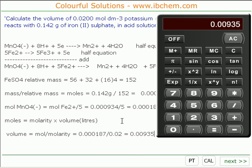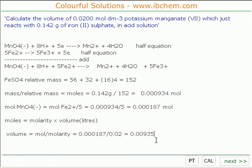Now remember, this is in litres. And that equals, multiplied by 1,000, equals 9.35 millilitres. So the answer is, the volume which is required to react with 0.142 grams of iron II sulphate in acid solution, is 9.35 millilitres.